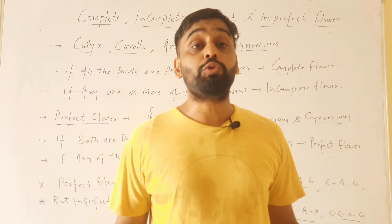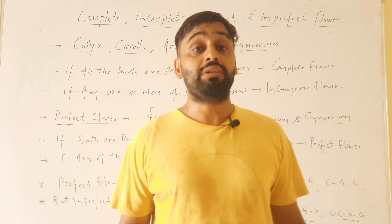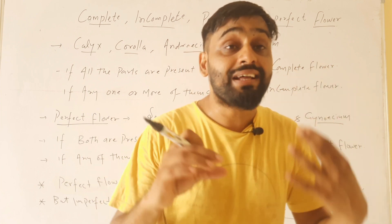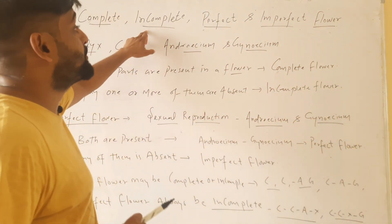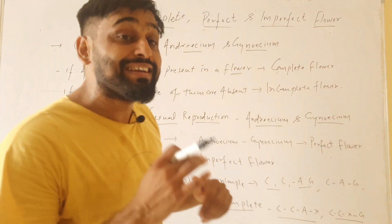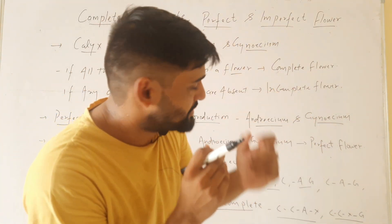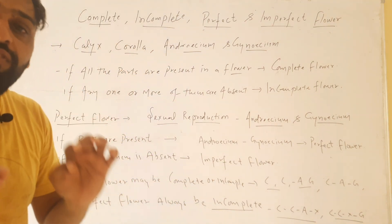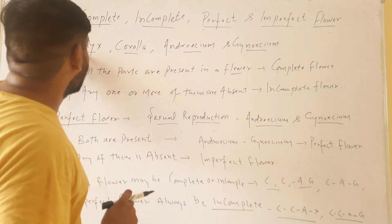Hello friends, welcome to my YouTube channel Dr. Sam's Biology. In this video we will discuss four important terms that are related to flowers: complete flower, incomplete flower, perfect flower, and imperfect flower. We will discuss the difference between these terms. First, we know that all flowers have four parts.